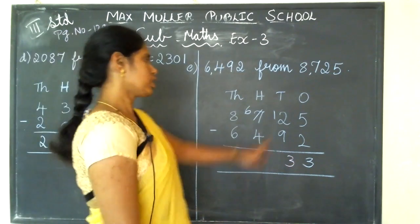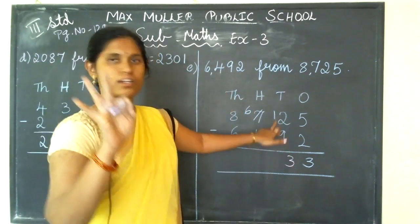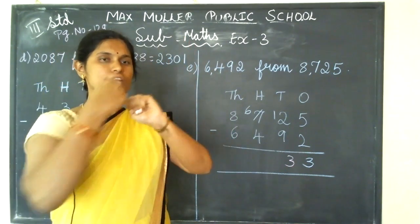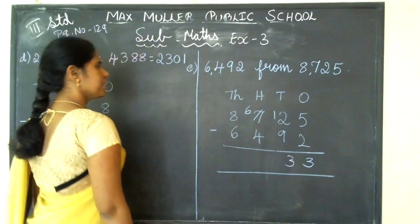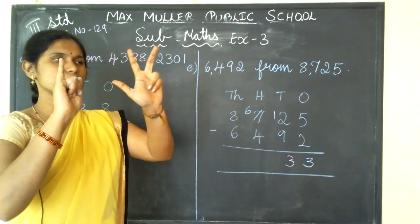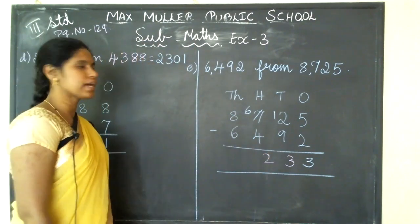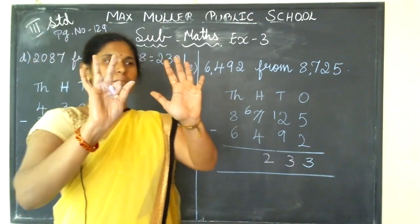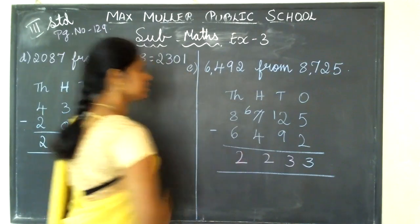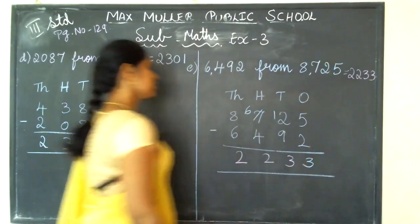Understood? 12 minus 9 — keep 9 on your fingers, start counting backwards: 12, 11, 10, 9, 8, 7, 6, 5, 4 — the next number is 3. Understood. Next, in the hundreds place: 6 minus 4 — from 6 I am cutting 4: 1, 2, 3, 4 — how much is remaining? 2. Write 2. Next, in the thousands place: 8 minus 6 — from 8 minus 6: 1, 2, 3, 4, 5, 6 — how much is remaining? 2. Write 2. Answer: 2,233.